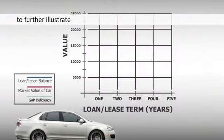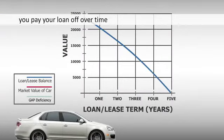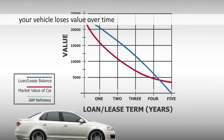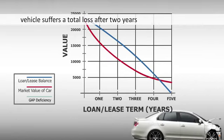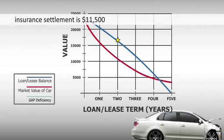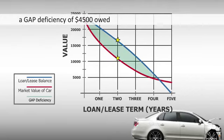To further illustrate, let's take a look at an example of a $24,000 loan. You pay your loan off over time, but your vehicle loses value over time. Assume that the vehicle suffers a total loss after two years when the loan balance is $16,000. Your insurance settlement is only $11,500. This creates a GAP deficiency of $4,500 owed.